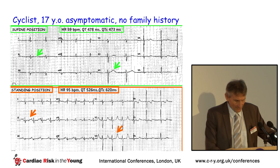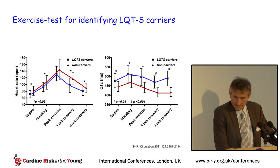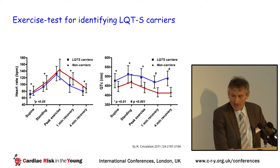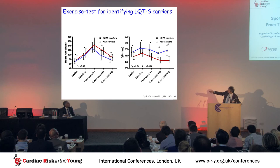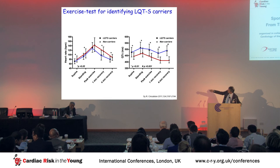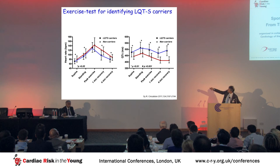Exercise testing is useful for identifying long QT syndrome. In long QT syndrome carriers, corrected QT is increased compared to controls in supine position, standing position, during exercise, and during recovery. The optimal measurement point is at four minutes into the recovery period.